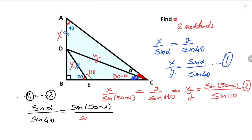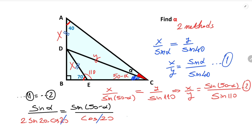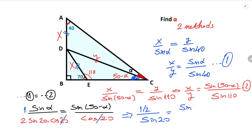Sine 110 can be written as sine 70, and sine 70 equals cosine 20. We know that the expansion of sine 40 equals 2 times sine 20 times cosine 20. So if we simplify the expression, there is a 1 here, so 1 over 2 over sine 20 equals sine(50 minus alpha) over sine alpha.